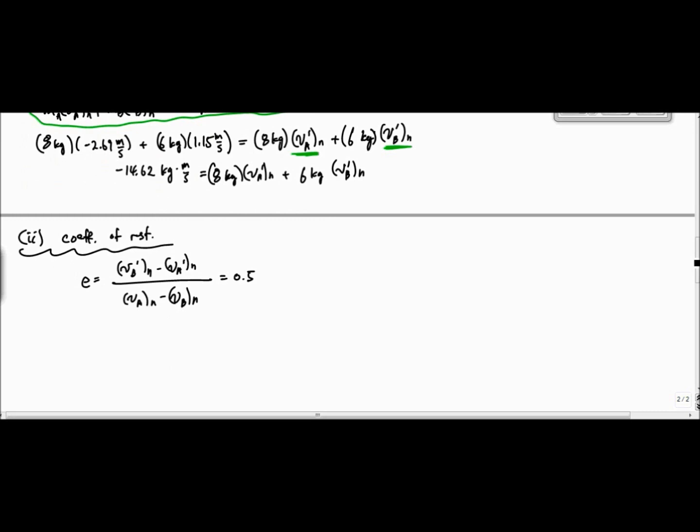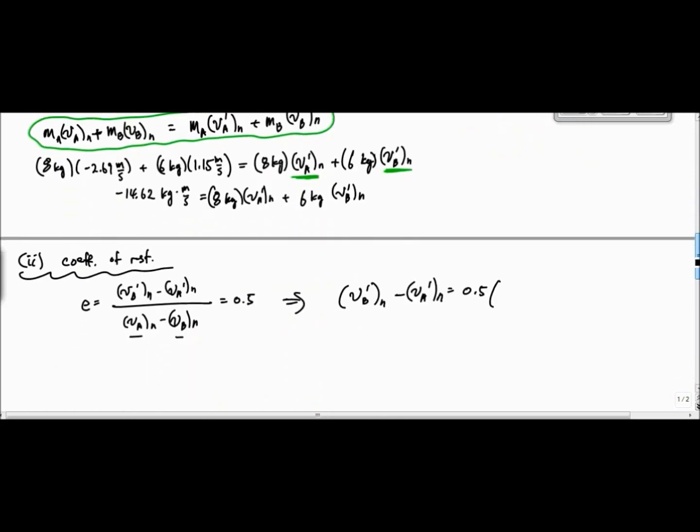So here if I use this, I know these two numbers. So this becomes VB prime of N minus VA prime of N is equal to 0.5 times the numbers for VA sub N, which I believe was minus 2.69 meters per second, minus the velocity of VBN, which is 1.15 meters per second. And that just becomes quite simply minus VA prime of N is equal to minus 1.92 meters per second.